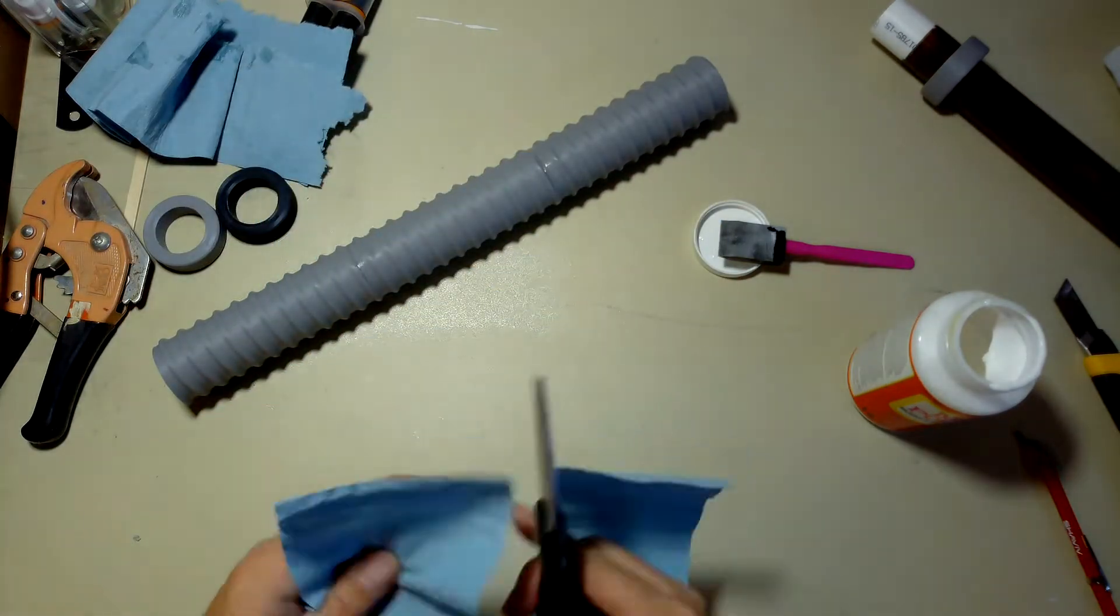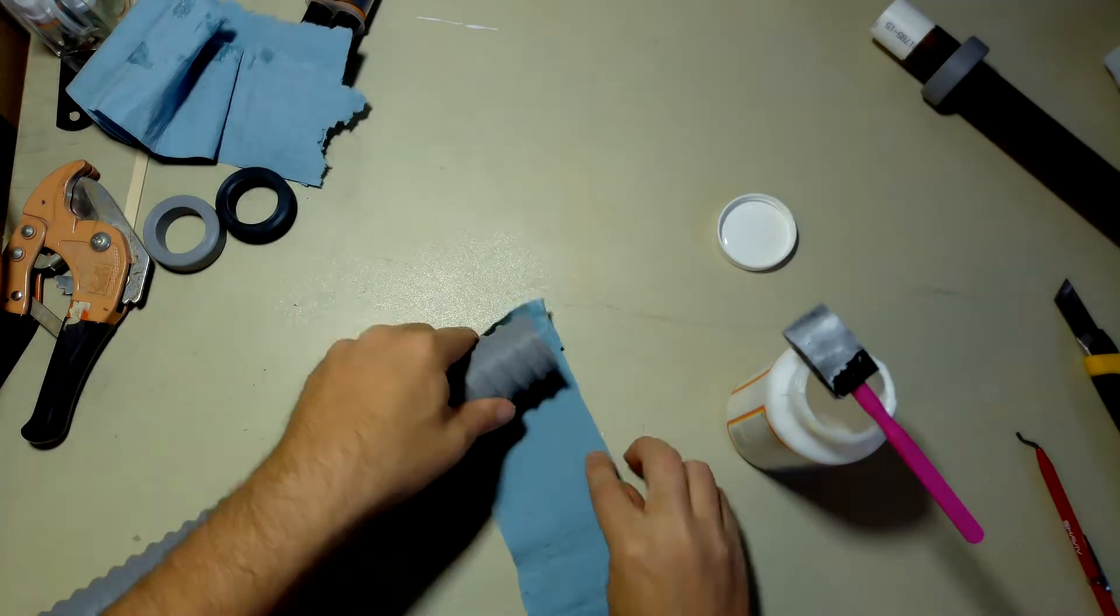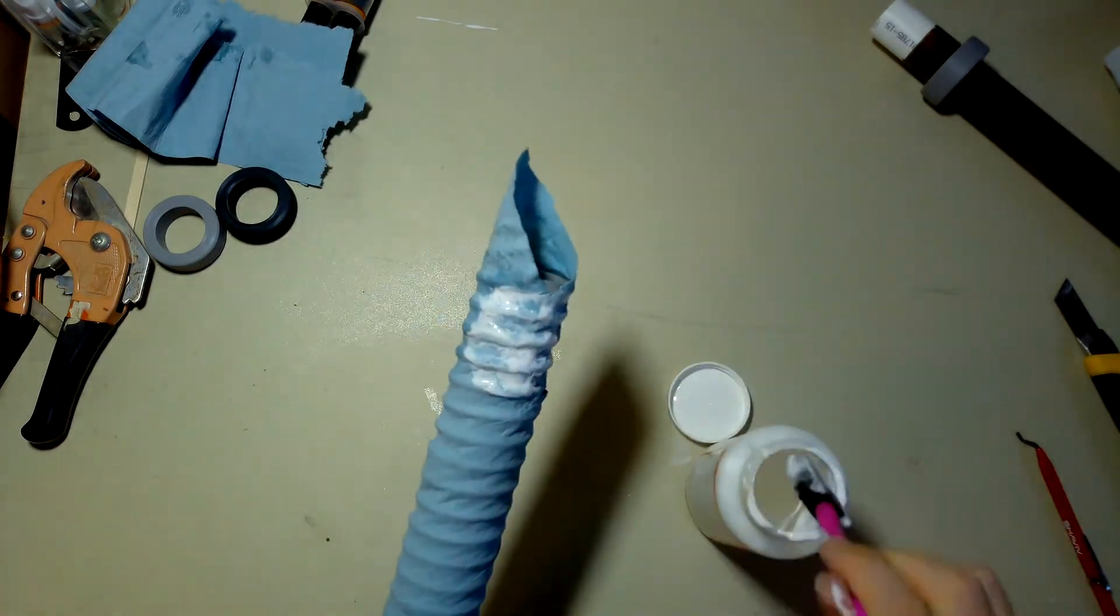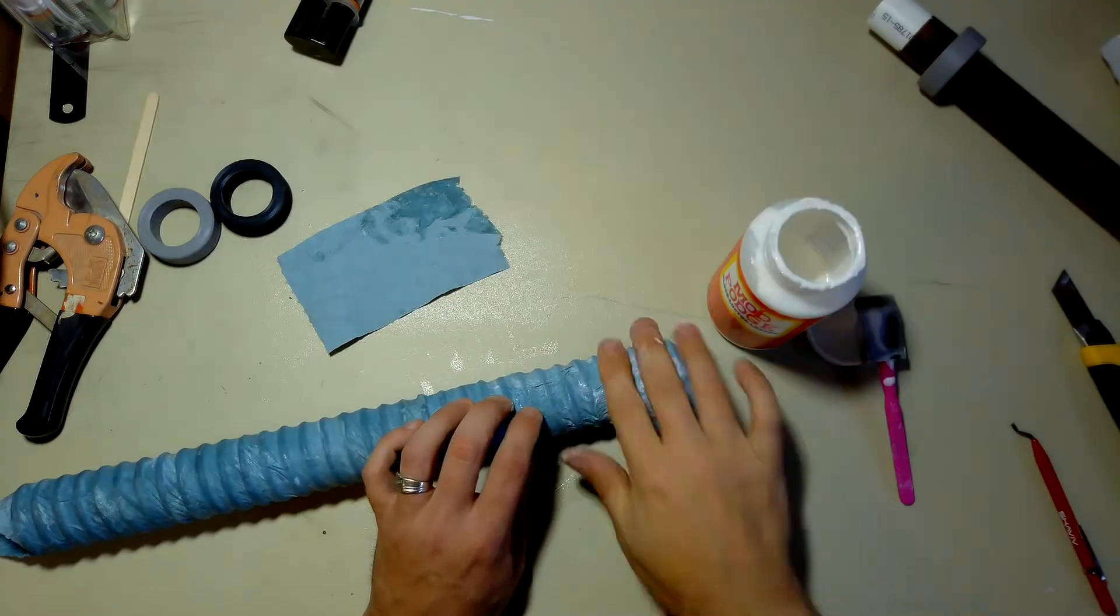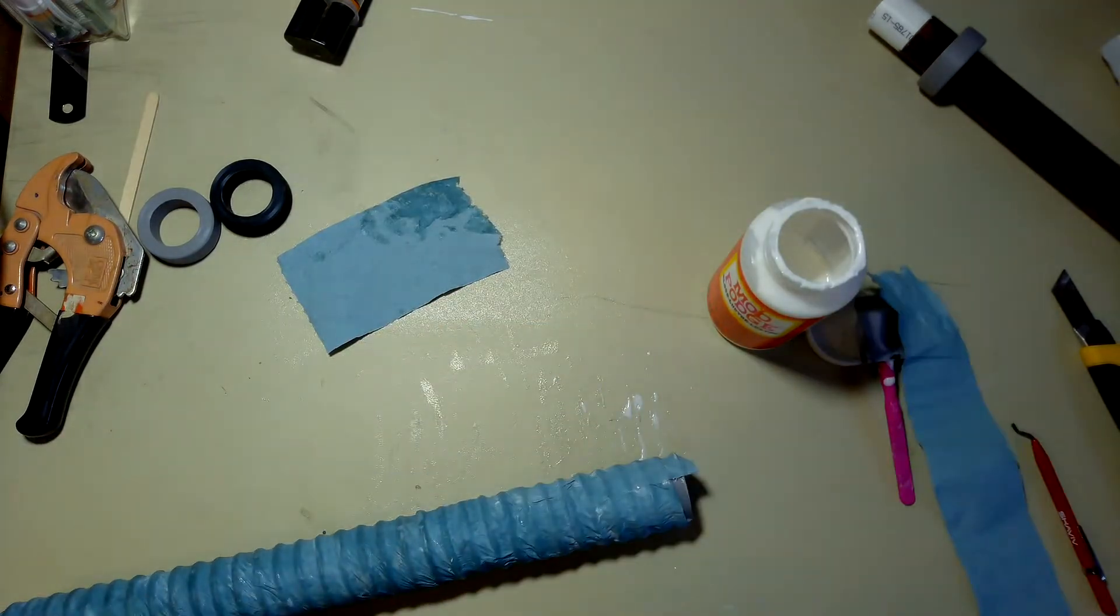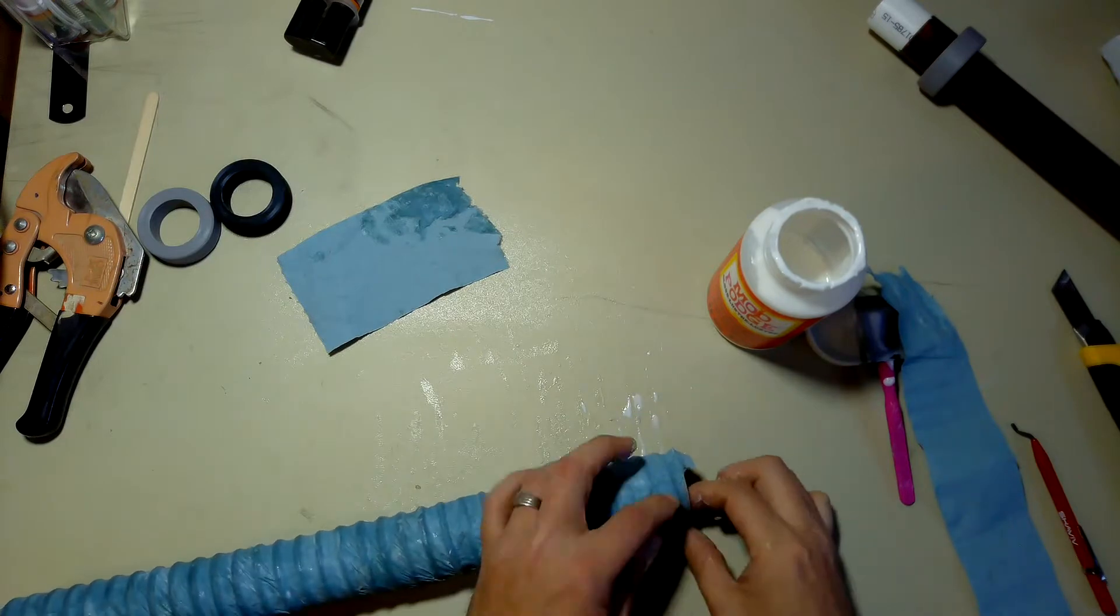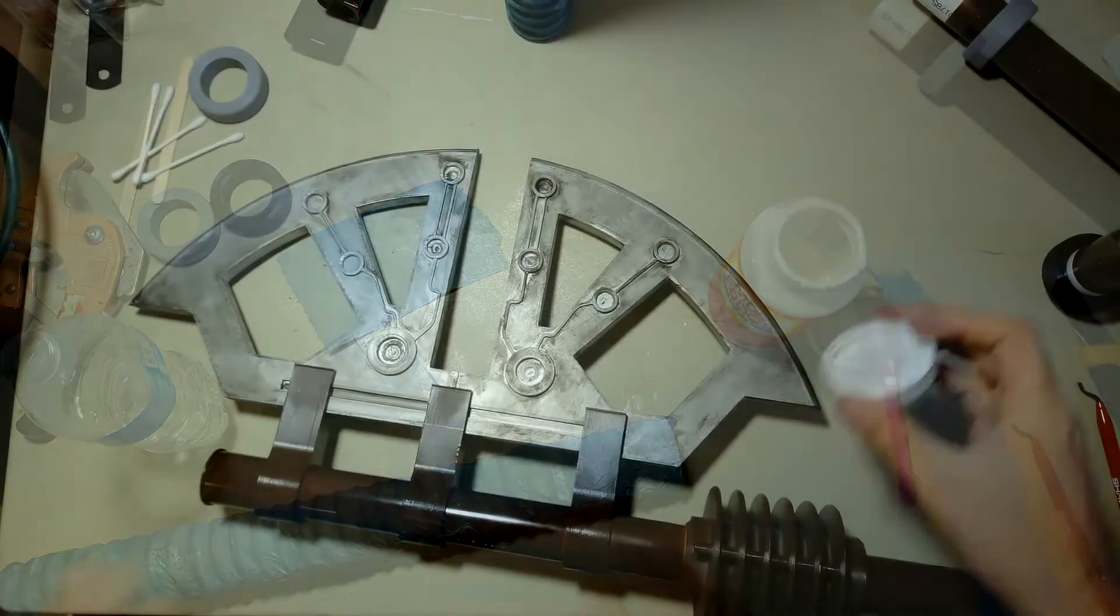So for the second one I decided to try a different method where instead of rolling one long piece along the edge, I kind of wrapped it. It went a lot quicker. It was a lot easier to get it together. Set those two aside.